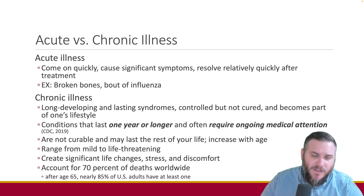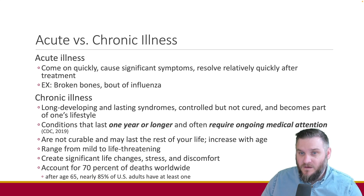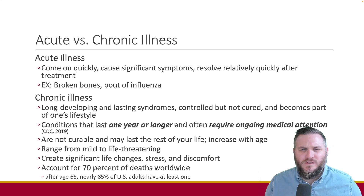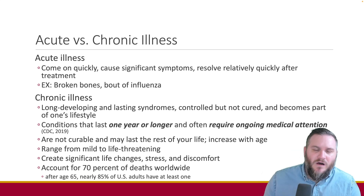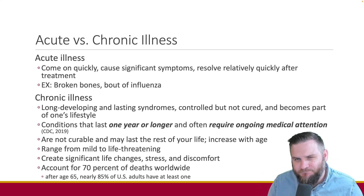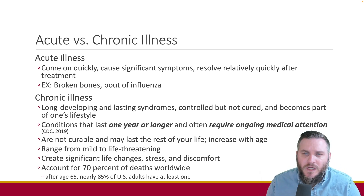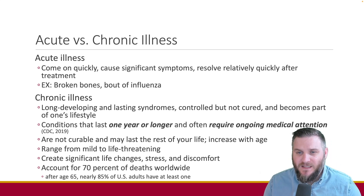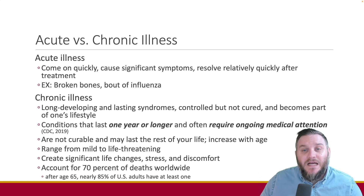Let's start with the differences between acute and chronic illnesses. Acute illnesses are usually severe and sudden in onset — think of them as the medical world's equivalent to a sprint. They come on quickly, cause significant symptoms, and then after treatment they usually resolve in a relatively short amount of time. Take for instance a broken bone or the flu: you feel the impact immediately, it requires immediate attention, but with proper treatment you recover fully.